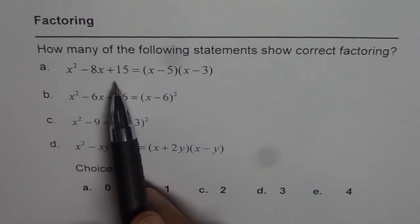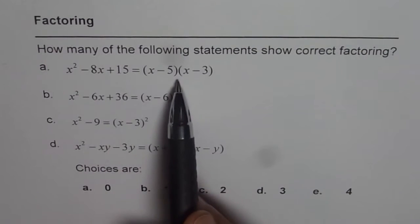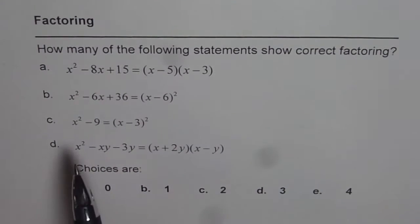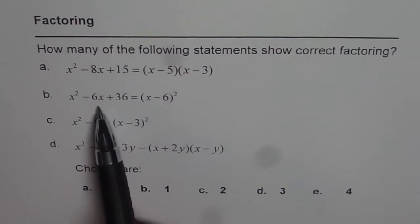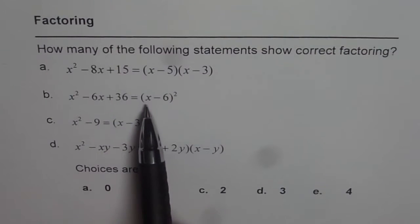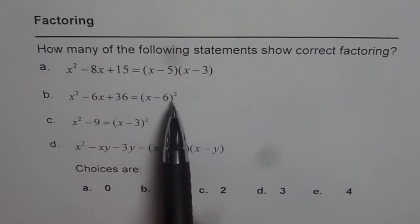x² - 8x + 15 = (x-5)(x-3). Part b is x² - 6x + 36 = (x-6)².